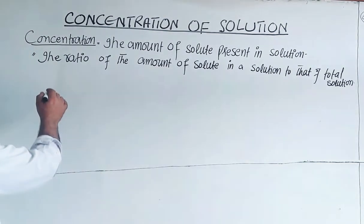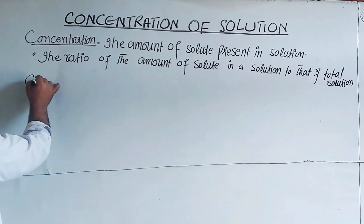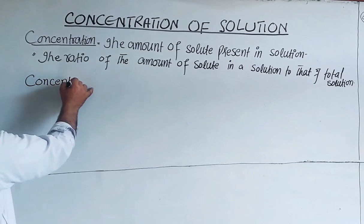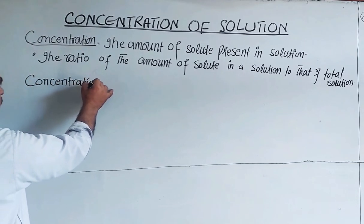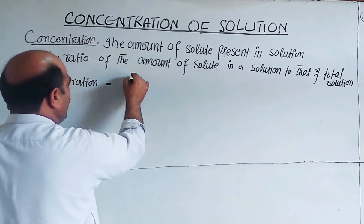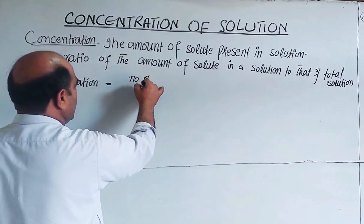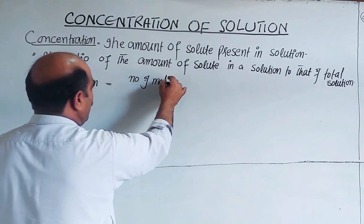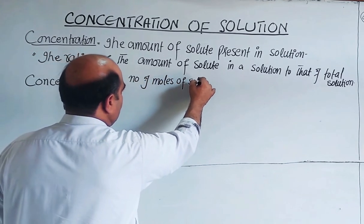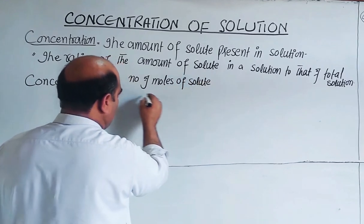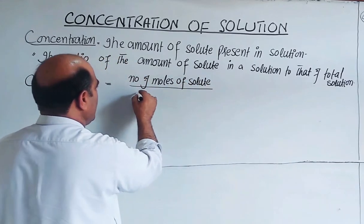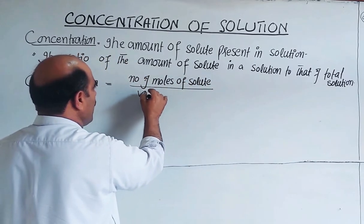Basically, concentration is the amount of solute — specifically, the amount of moles of solute. The concentration is the ratio of the amount of moles of solute divided by the volume of solution.